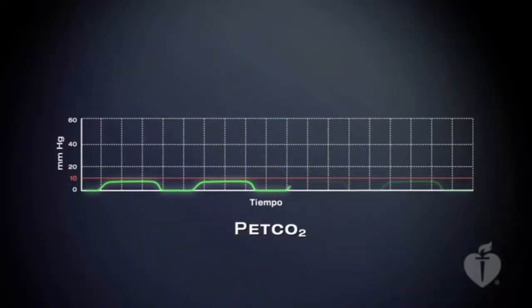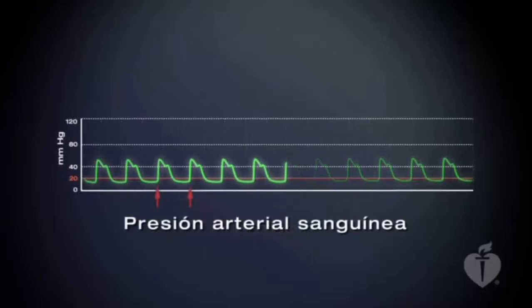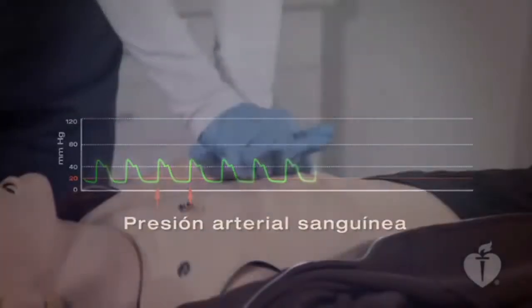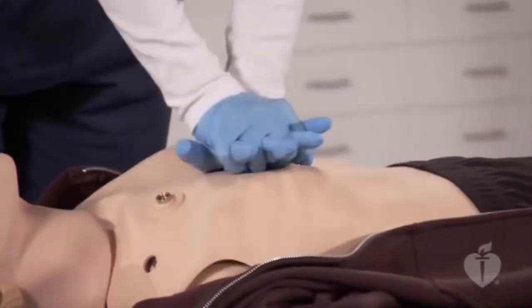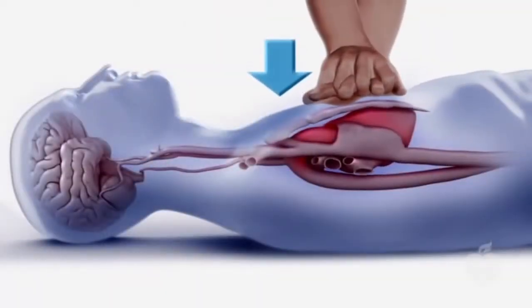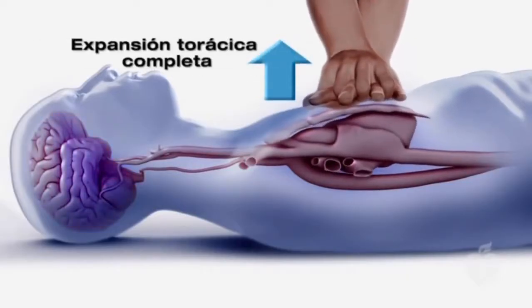Aunque la calidad de la RCP se puede monitorizar con la capnografía y el monitoreo invasivo de la presión, hablaremos de la capnografía más adelante. En pacientes con un CO2 al final de la expiración de menos de 10 mmHg, podría anodarse el RCE. En el monitoreo invasivo de la presión, una lectura inferior a los 20 mmHg indica compresiones ineficaces.